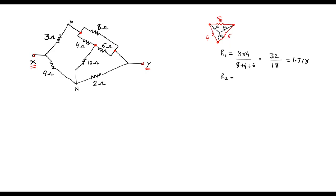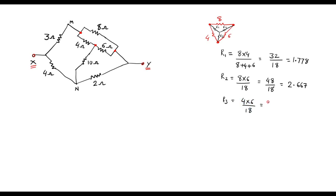Similarly, R2 equals the product of its adjacent resistors: R2 = (8 × 6) / 18 = 48 / 18 = 2.667Ω. And R3 = (4 × 6) / 18 = 24 / 18 = 1.333Ω. All values are in ohms.